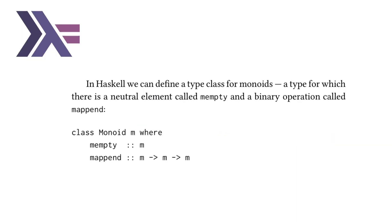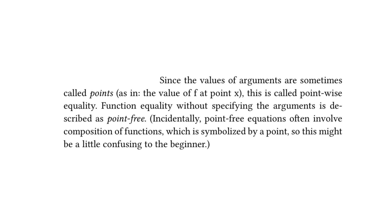Moving on, there are two last things we should mention. One is that in the book, they talk about or introduce mempty and mappend. So the text reads, in Haskell, we can define a type class for monoids, a type for which there is a neutral element called mempty and a binary operation called mappend. So I'm not sure if this will come up later in the text, but it's useful to know that mempty is the neutral element, aka the identity value, and that mappend is our binary operation.